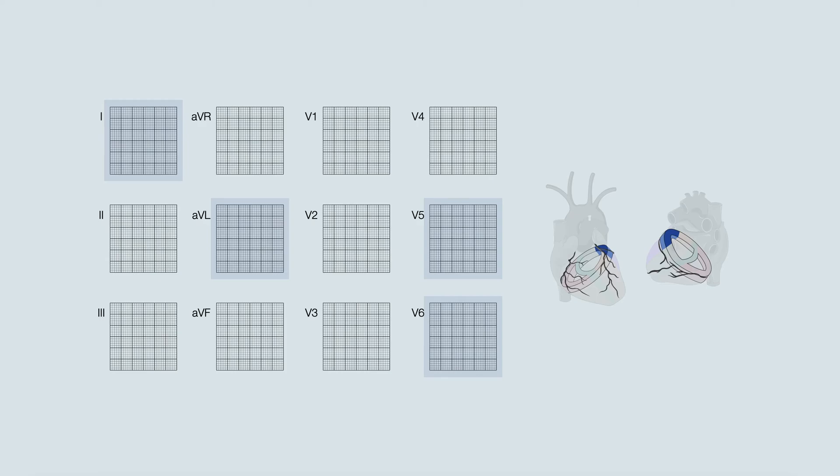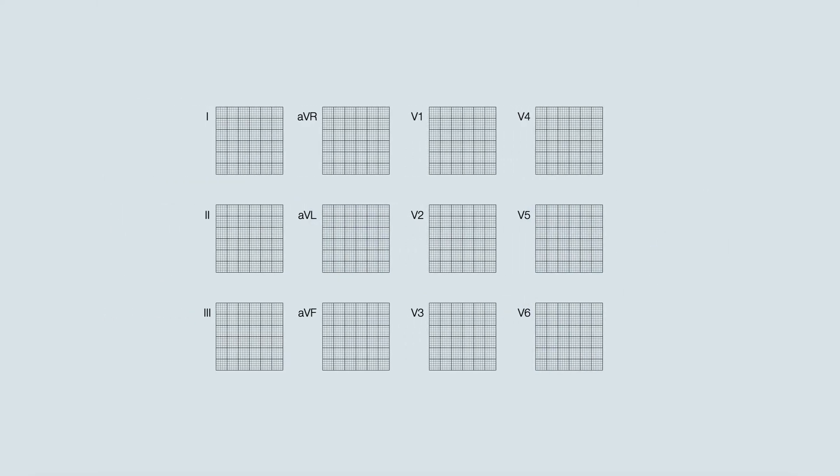A 12-lead ECG has 12 views. Each one aims to provide a specific vantage point of the heart — they theoretically provide us with 12 different views or perspectives of the heart.